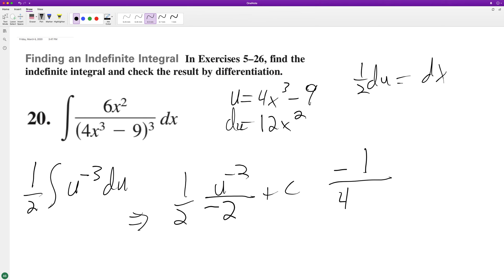And then we'll sub back in for U. So we'll have 4x cubed minus 9 plus C. And this should be squared.